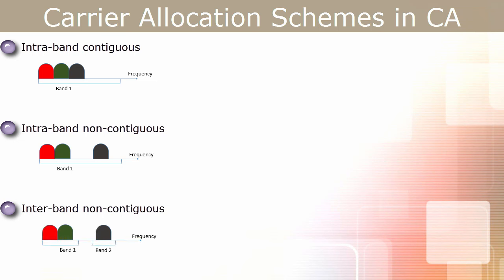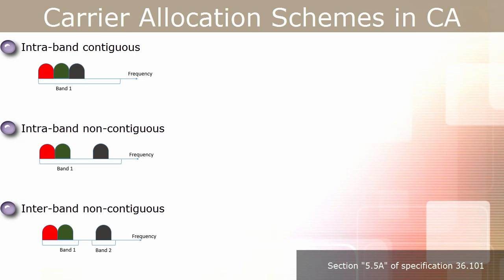Third, interband non-contiguous: in this scheme, the primary component carrier and secondary component carriers are allocated from two different frequency bands. There are almost 50 LTE bands available as per the latest specifications, so there would be an infinite number of possible band combinations if we use all these carrier allocation schemes. To resolve this problem, 3GPP has defined all the allowed band combinations for CA, listed in section 5.5A of specification 36.101.